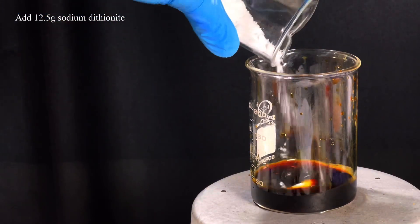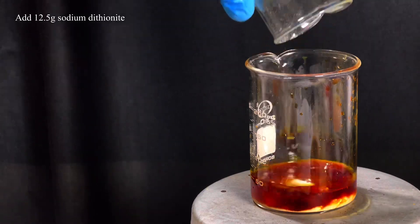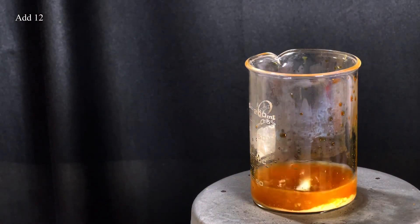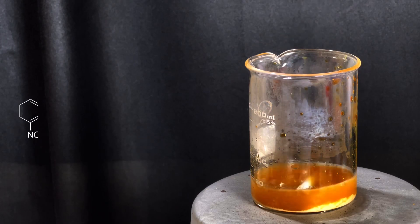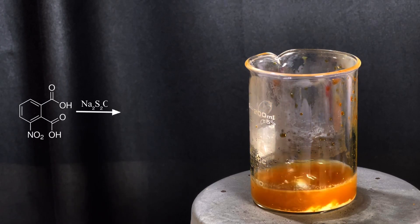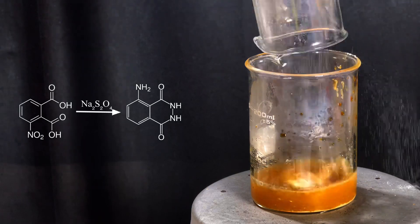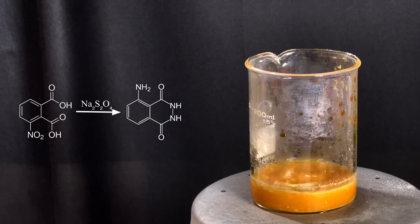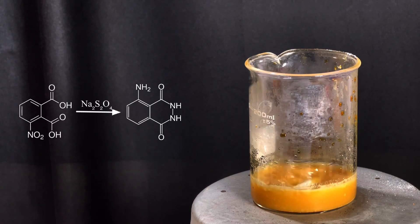Now we dump in 12.5 grams of solid sodium dithionite to the beaker. Immediately you see an exothermic reaction taking place and the color of the solution turns pale brown and a precipitate appears. This is the 3-aminophthalhydrazide or luminol. Sodium dithionite reduces the nitro group of 3-nitrophthalhydrazide to form luminol.